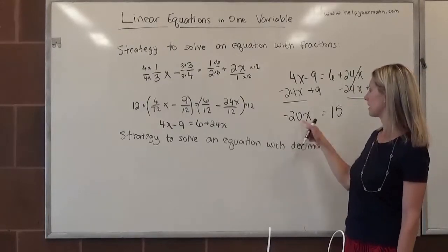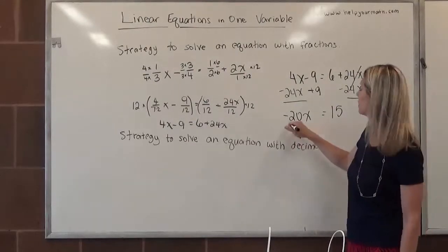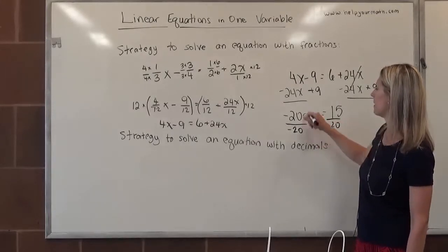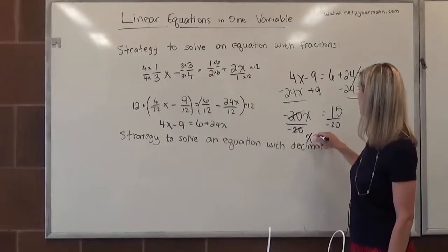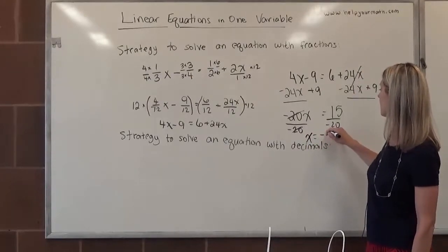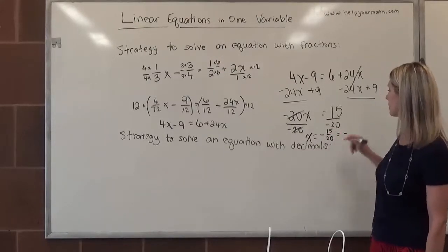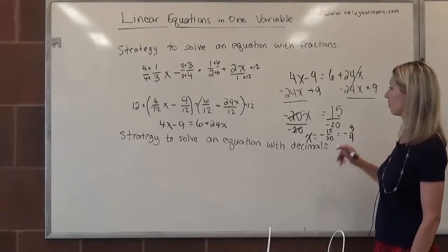To get x by itself, it's being multiplied by negative 20. I can undo multiplication by dividing by negative 20. Negative 20 divided by negative 20 cancel, they make 1, and 1 times x is x. On the right-hand side, I have 15 over negative 20, which is negative 15/20. I should simplify my answer. They're both divisible by 5, which gives me negative 3/4.